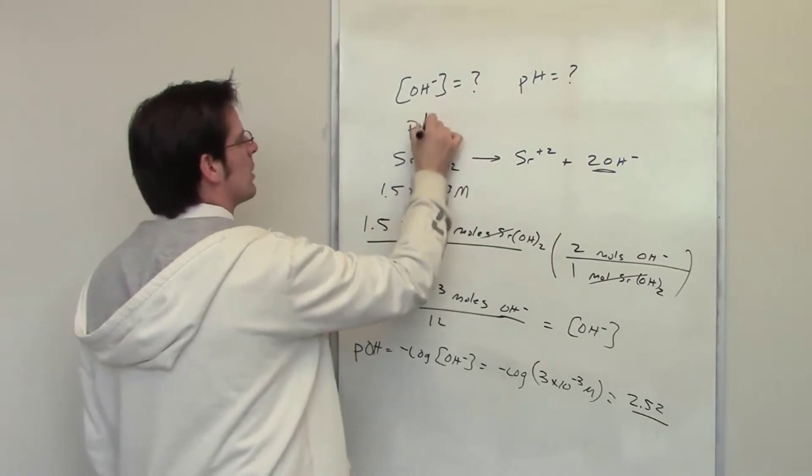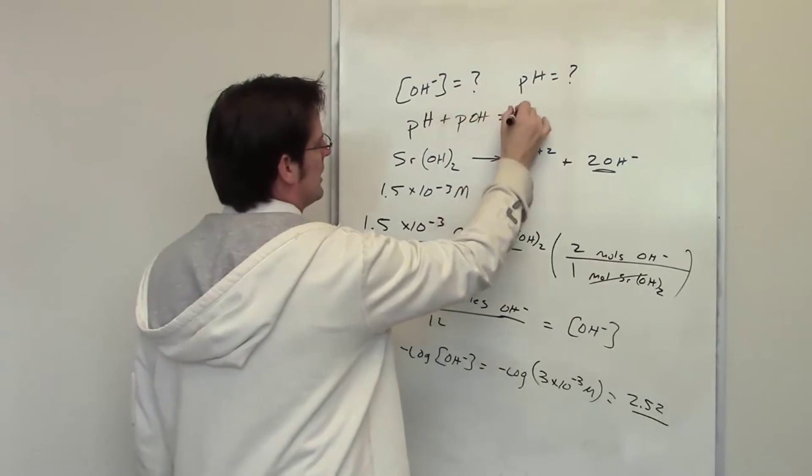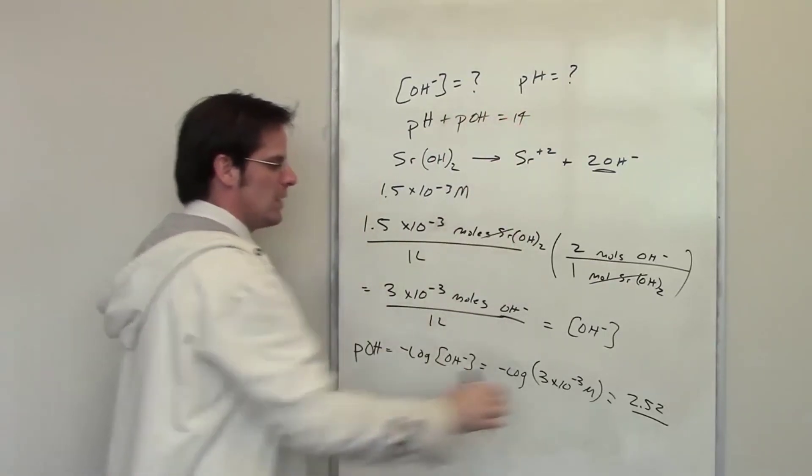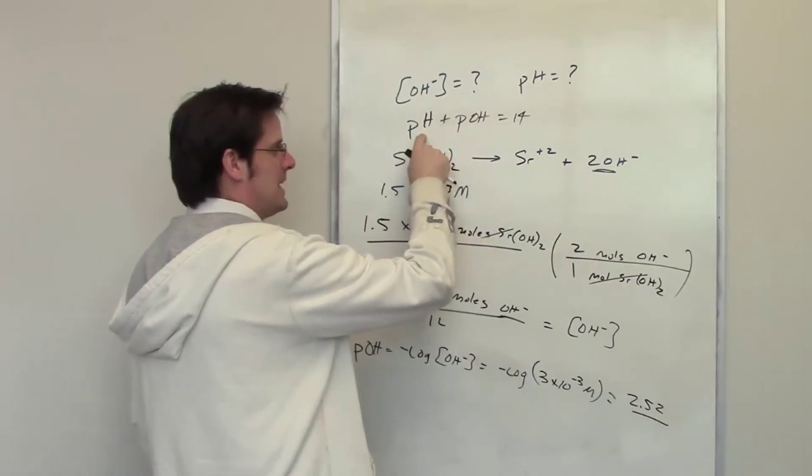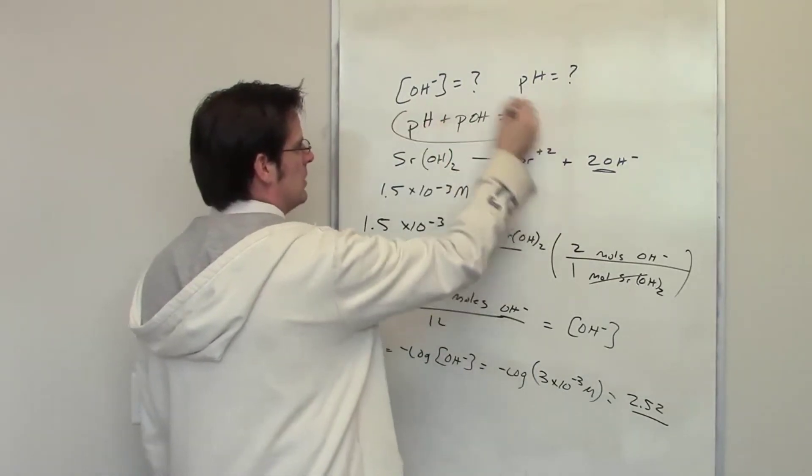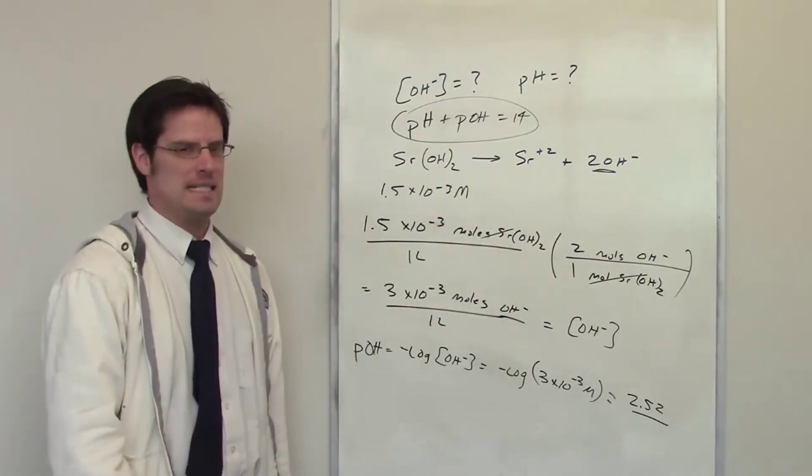You might remember an equation I taught you elsewhere that says pH plus pOH are equal to 14. I know what pOH is. Can I just use algebra to determine what pH is? Absolutely. So go ahead and throw 2.52 for pOH and solve for pH and then you'll be done.